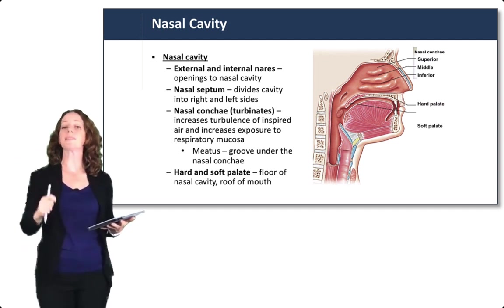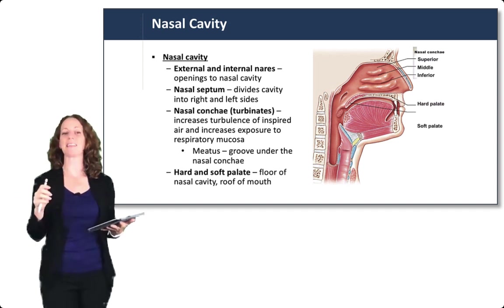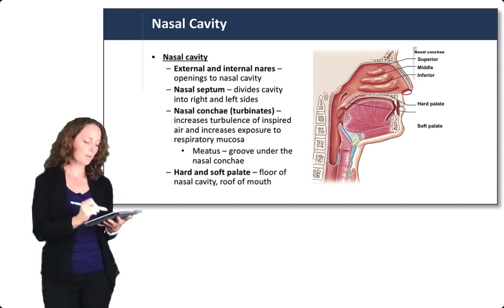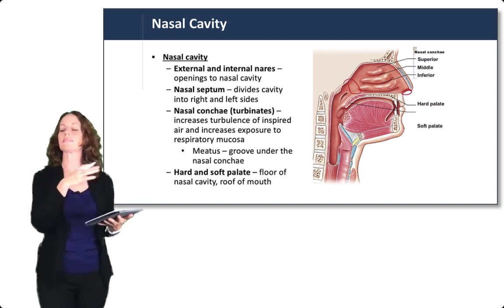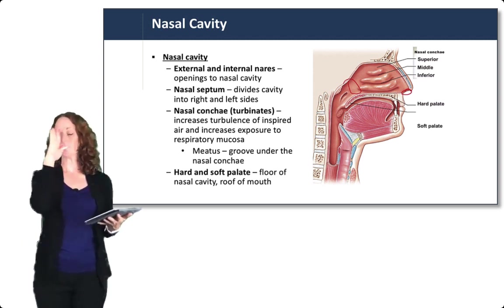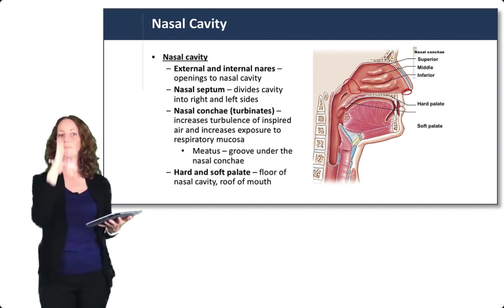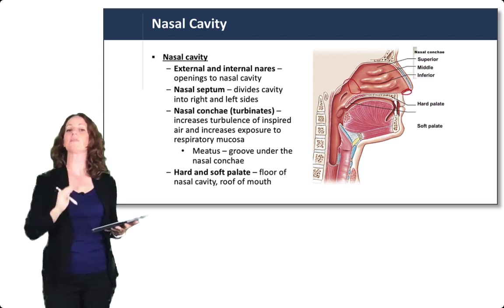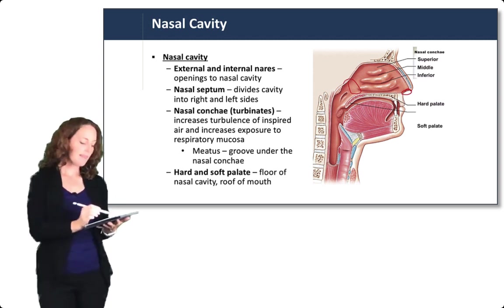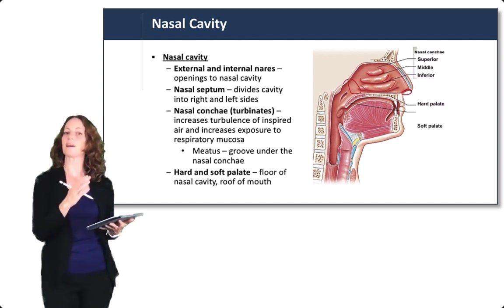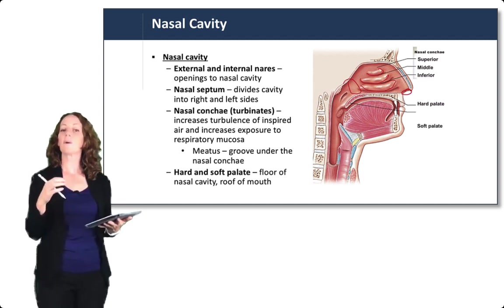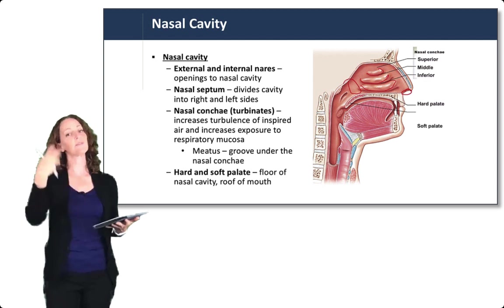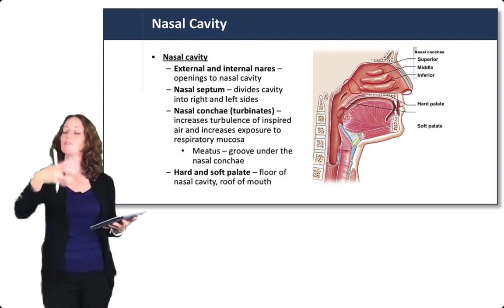Starting at the nasal cavity, air enters through the external nares — the openings to the outside — and the internal nares open to the pharynx. Between the right and left sides is the nasal septum, a bony and cartilaginous divider. Along the septum are the nasal conchae, also called nasal turbinates — superior, middle, and inferior — formed by bone covered in mucosa. These increase turbulence of inspired air and increase exposure to the respiratory mucosa.